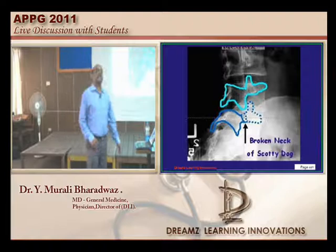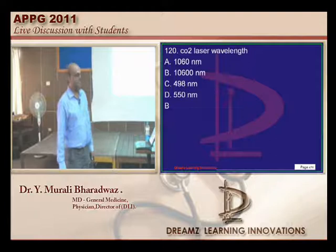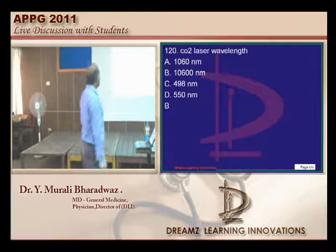What is the CO2 laser wavelength? Once more, this is a very tricky question. It is 10,600 nanometers — luck factor, astrology.